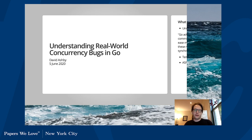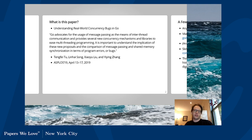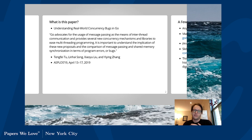What is this paper? 'Understanding Real-World Concurrency Bugs in Go' was released about a year ago now. The four writers — Tengfeng Tu, Li Hai Song, Xiaoyu Liu, and Yi Ling Zhang. My apologies to all four of them for the butchering of their names. It's an examination of bugs in Go programs related to the usage of concurrency programming and multi-threading programming in Go.